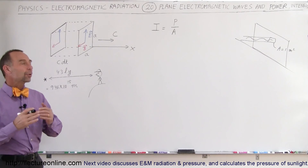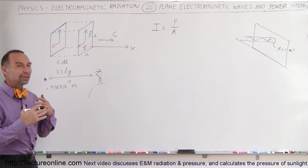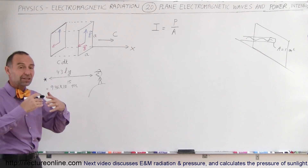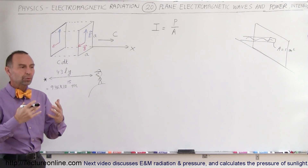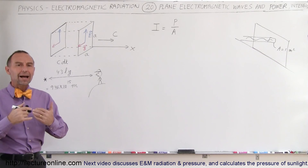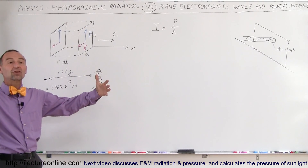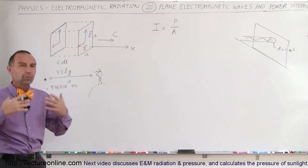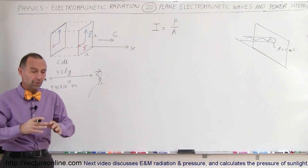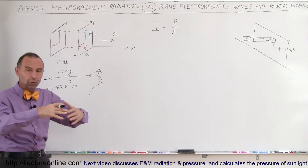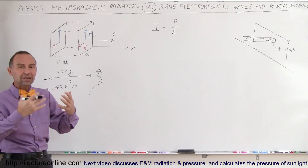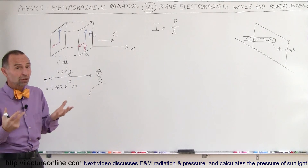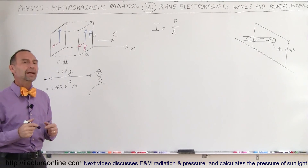Welcome to ElectronLine. We're going to talk about the relationship between intensity and power. Any object that produces electromagnetic radiation produces a certain amount of energy per unit time — that's known as power. Stars produce power, light bulbs produce power, even a brick produces a certain amount of energy per unit time emanated from the object, because all objects in the universe produce electromagnetic radiation.